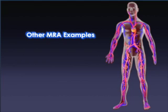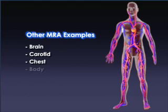This module reviews MRA of the brain, carotid, chest, body, and extremities.